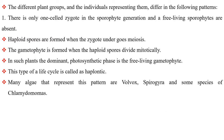In one pattern, there is only one cell — the zygote — in the sporophyte generation and free-living sporophytes are absent. Haploid spores are formed when the zygote undergoes meiosis. The gametophyte is formed when the haploid spores divide mitotically. In such plants, the dominant photosynthetic phase is the free-living gametophyte. This type of life cycle is called haplontic. Many algae represent this pattern, such as Volvox, Spirogyra and some species of Chlamydomonas.